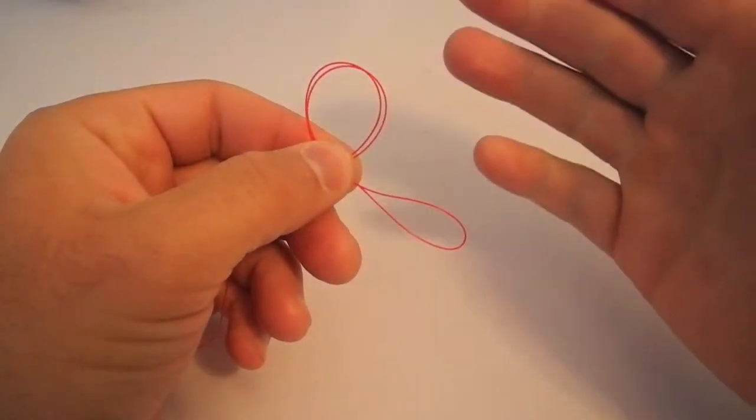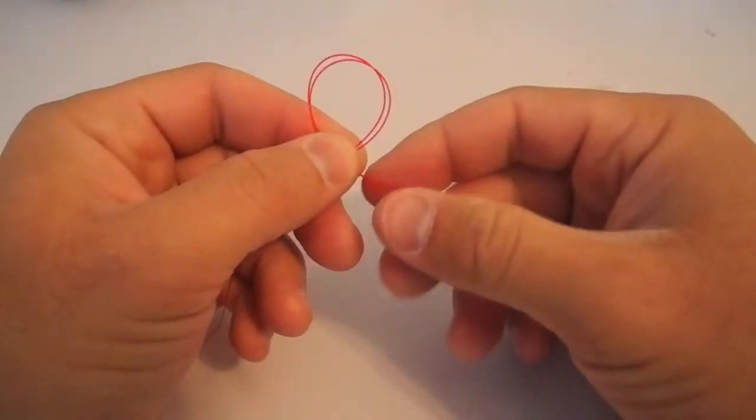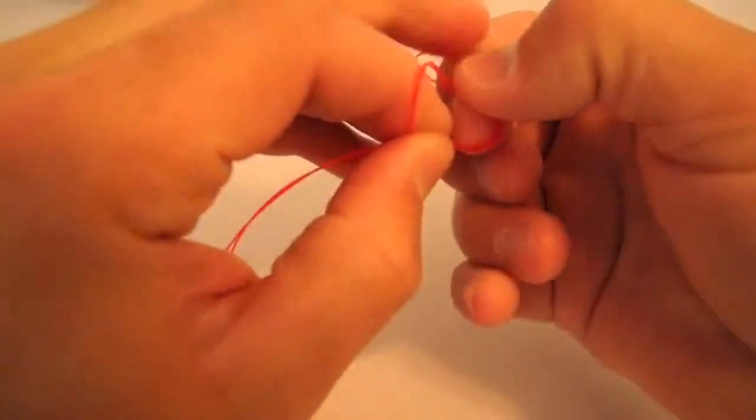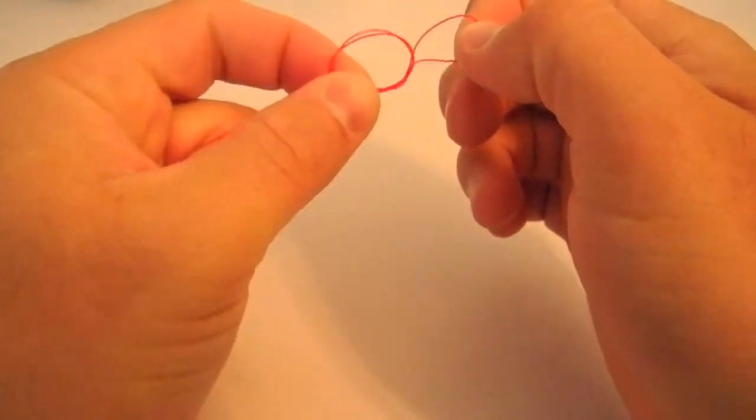Then I'm just going to do a makeshift overhand knot and go through that loop twice with the loop that I made, just like so.